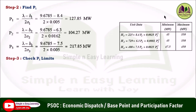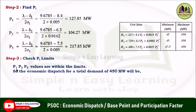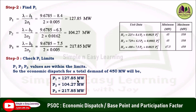Now check the limits. The minimum and maximum limits for each unit are given. For unit 1, the minimum is 45 and maximum is 350 — P1 = 127.85 MW lies within the limit. Unit 2 (45 to 350) and unit 3 with P3 = 217.85 MW also lie within limits. Therefore, the economic dispatch for 450 MW is: P1 = 127.85 MW, P2 = 104.27 MW, P3 = 217.85 MW.